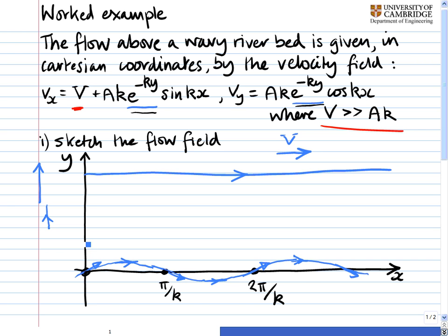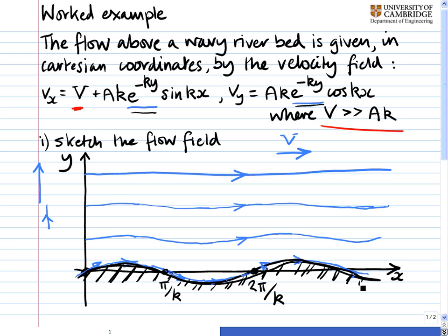So a little bit further up we'll have the same sort of streamlined shape, but it'll be with a smaller amplitude. And then further up the amplitude will be even lower. So we end up then with the flow over a wavy riverbed.